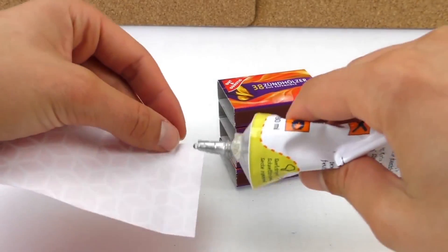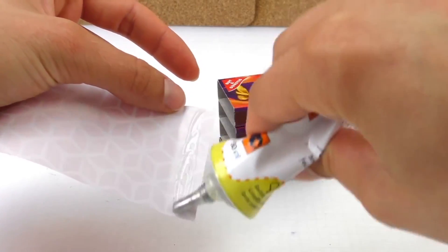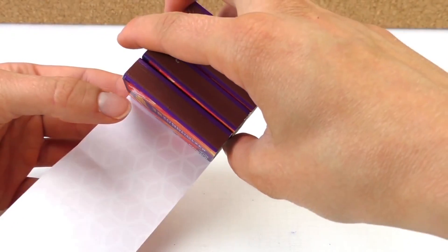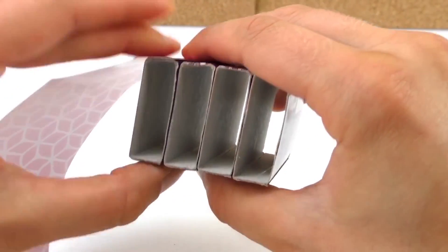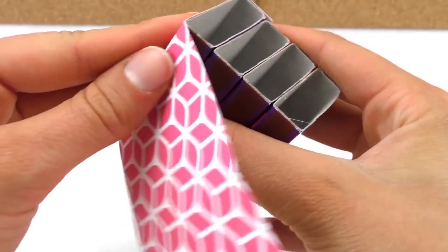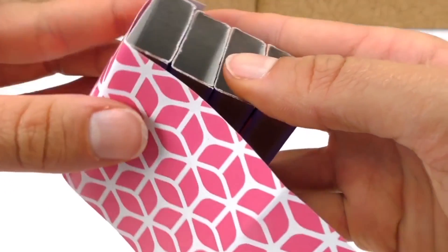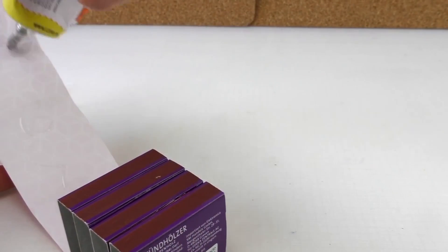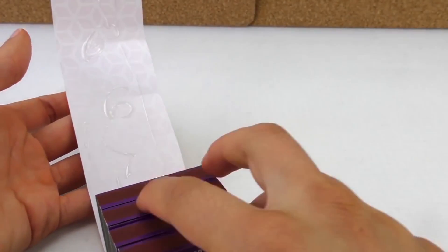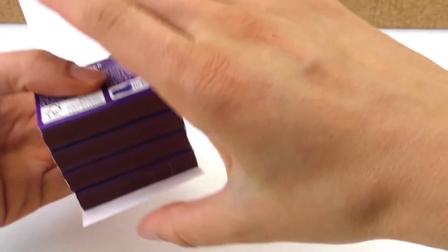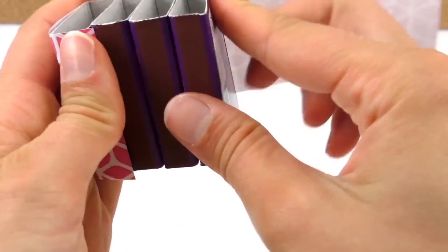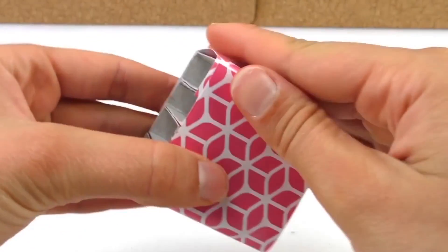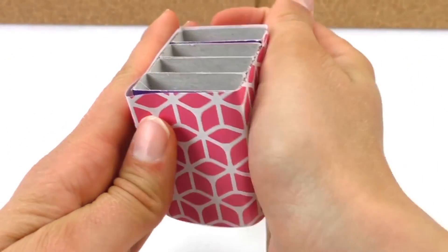We're going to use glue again. Place that down and hold it. I'm going to place this all the way around. Then again, use some glue. Press it down.